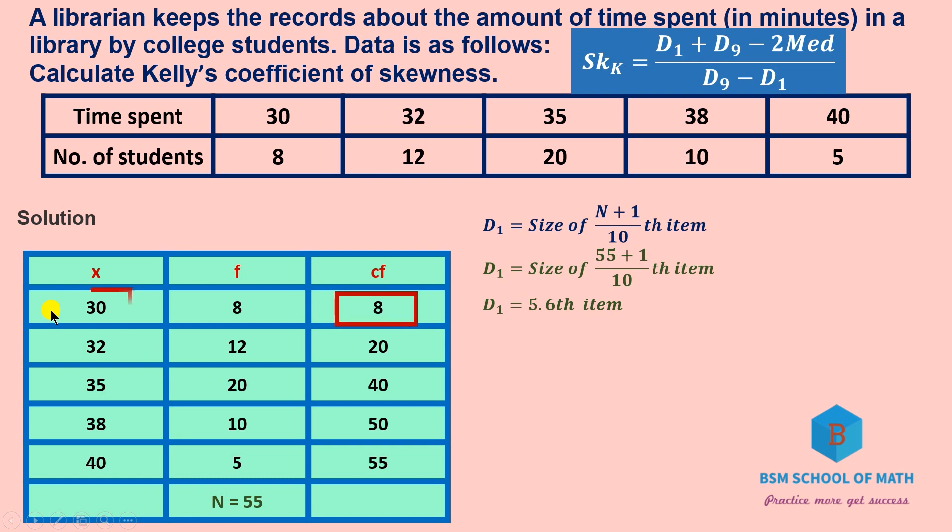5.6 or above, the corresponding value is 8 in the CF column. So D1 equals 30.